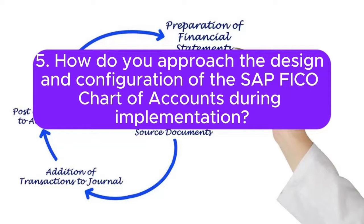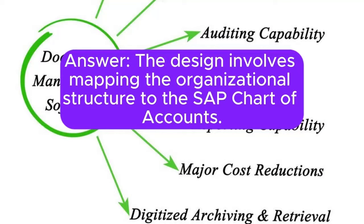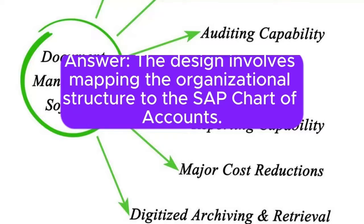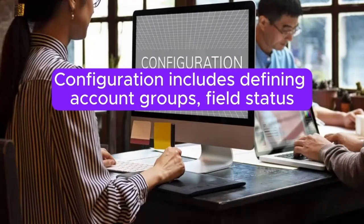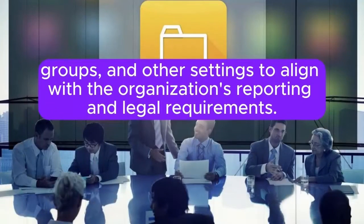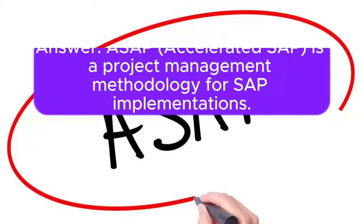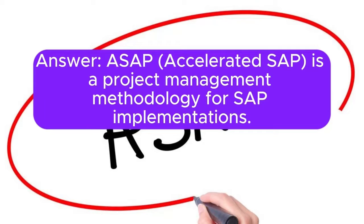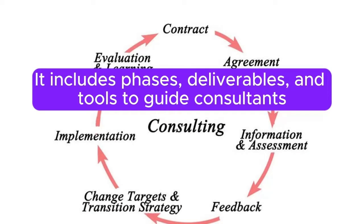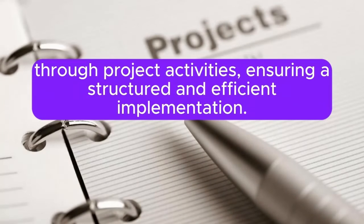Question 5: How do you approach the design and configuration of the SAP FICO chart of accounts during implementation? The design involves mapping the organizational structure to the SAP chart of accounts. Configuration includes defining account groups, field status groups, and other settings to align with the organization's reporting and legal requirements. Question 6: What is SAP ASAP methodology and how does it apply to SAP FICO implementation projects? ASAP (Accelerated SAP) is a project management methodology for SAP implementations. It includes phases, deliverables, and tools to guide consultants through project activities, ensuring a structured and efficient implementation.